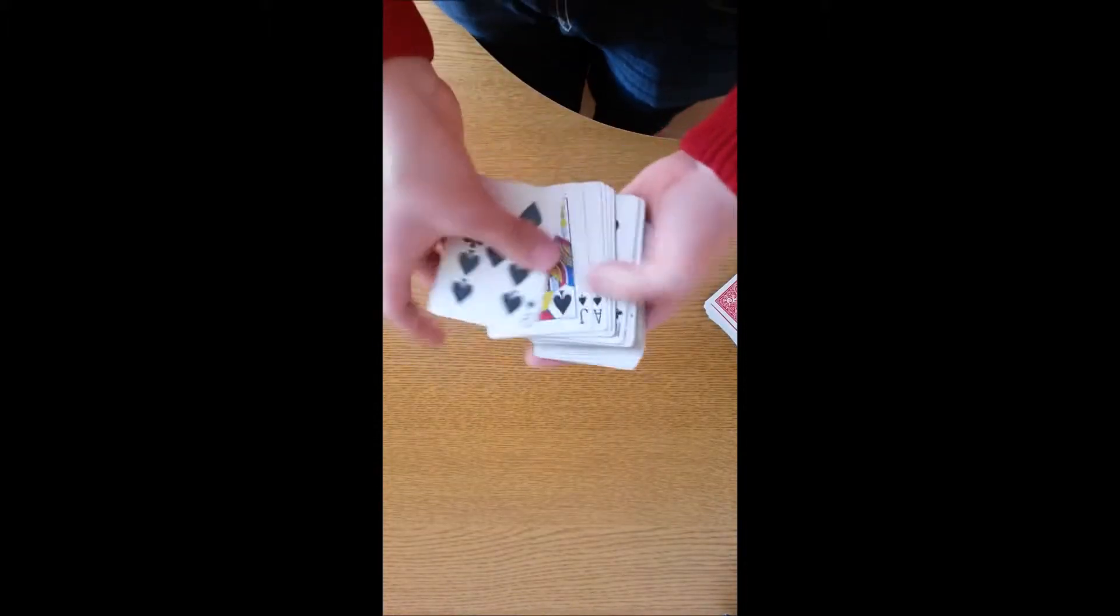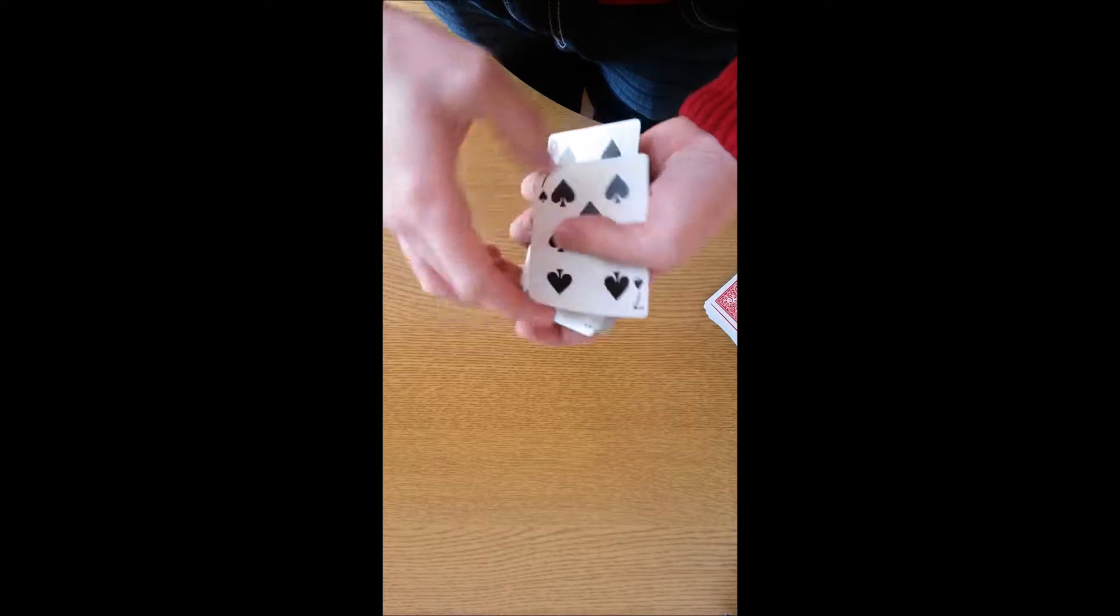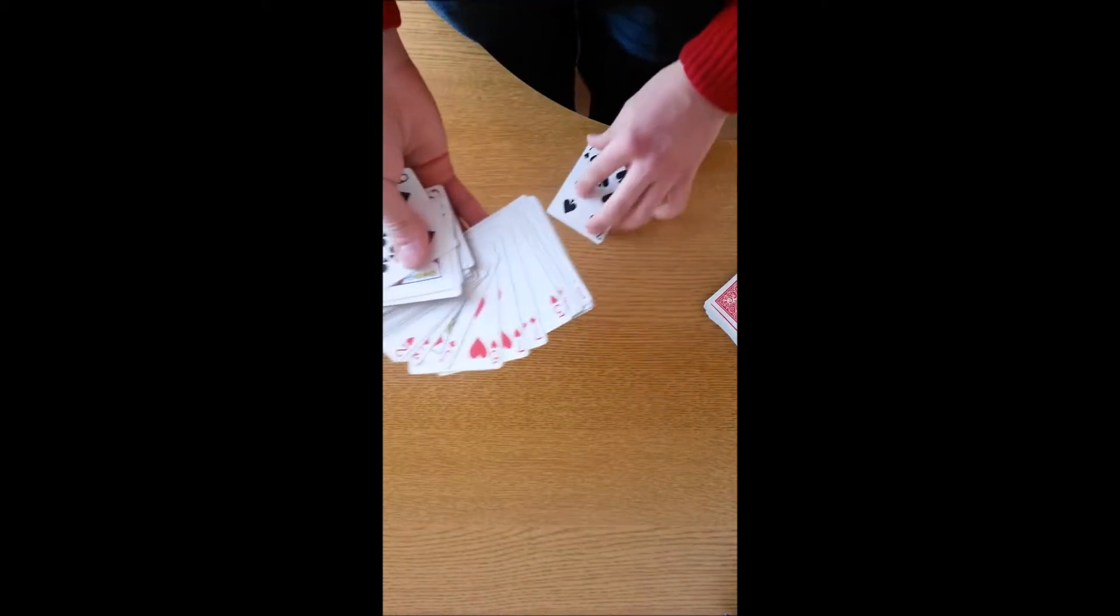You just take one random black card—in this case we'll take the Seven of Spades—and you put it somewhere in the red pile.